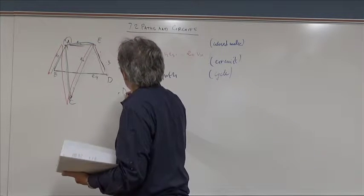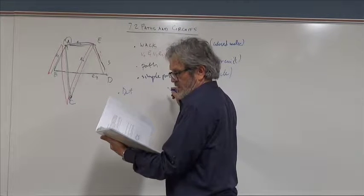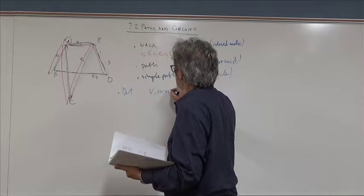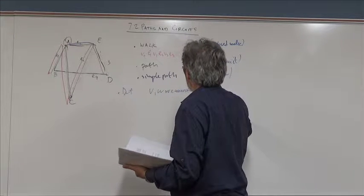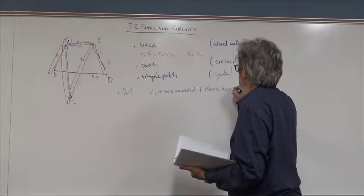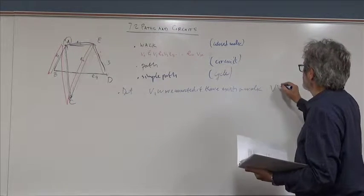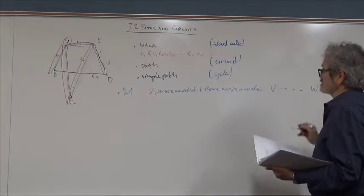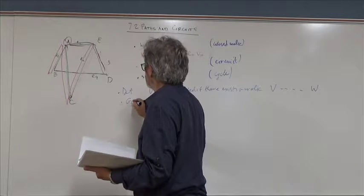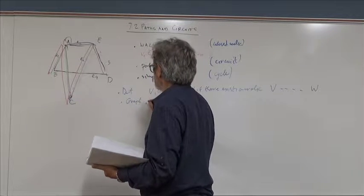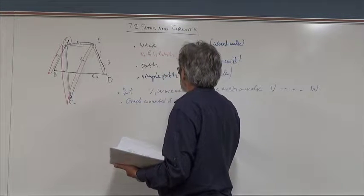Another definition: two vertices V and W are connected if there exists a walk that starts at V and ends at W. A graph is connected if every two vertices are connected.